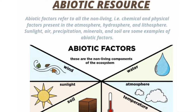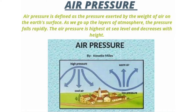Air pressure. Air pressure is defined as the pressure exerted by the weight of air on the earth's surface. As we go up the layers of atmosphere, the pressure falls rapidly. The air pressure is highest at sea level and decreases with height.